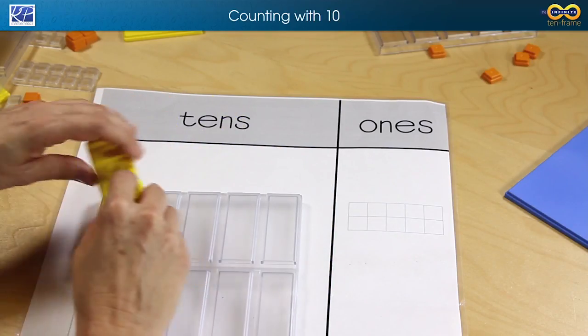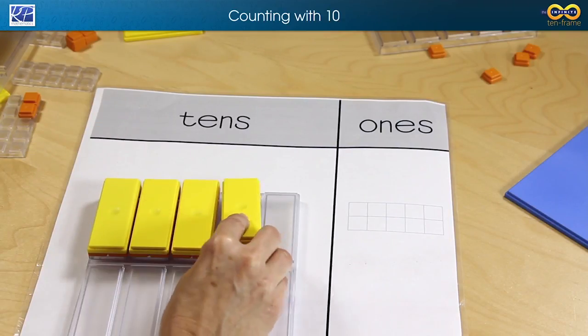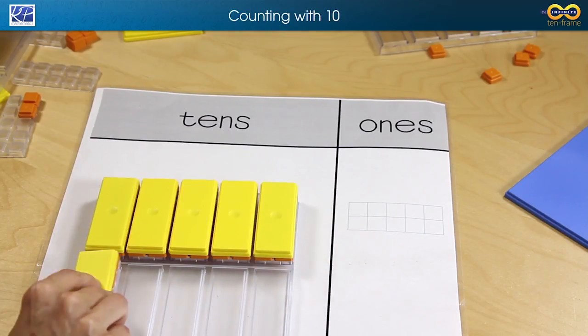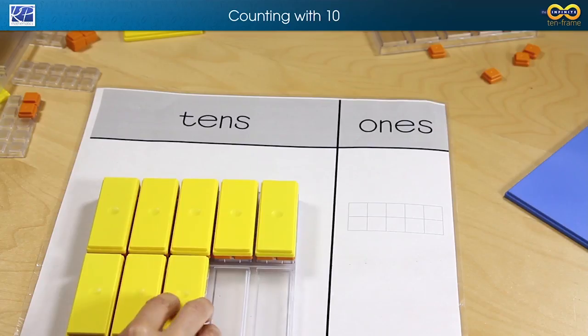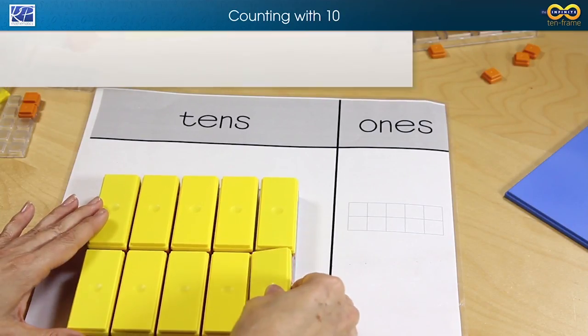Here's one 10, two 10s, three 10s, four 10s, five 10s, six 10s, seven 10s, eight 10s, nine 10s, and ten 10s.